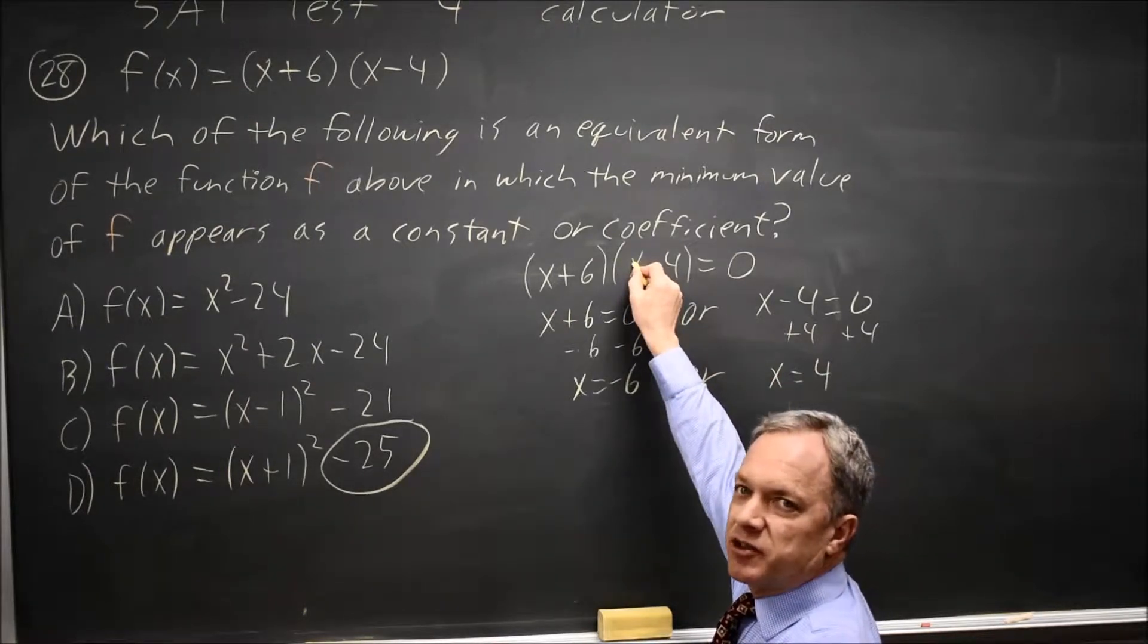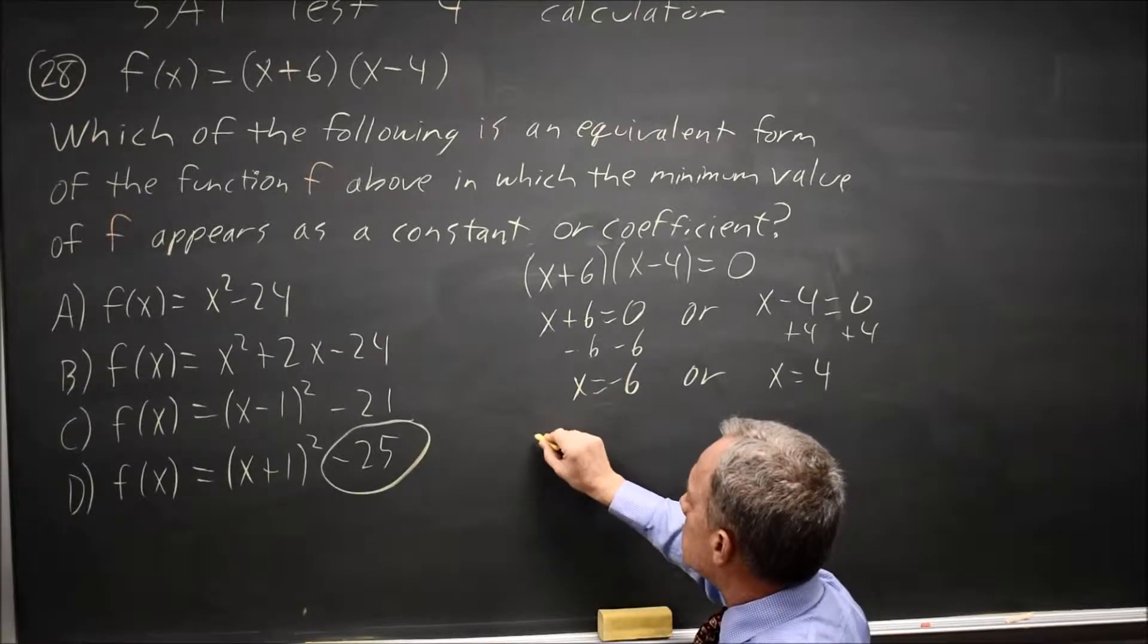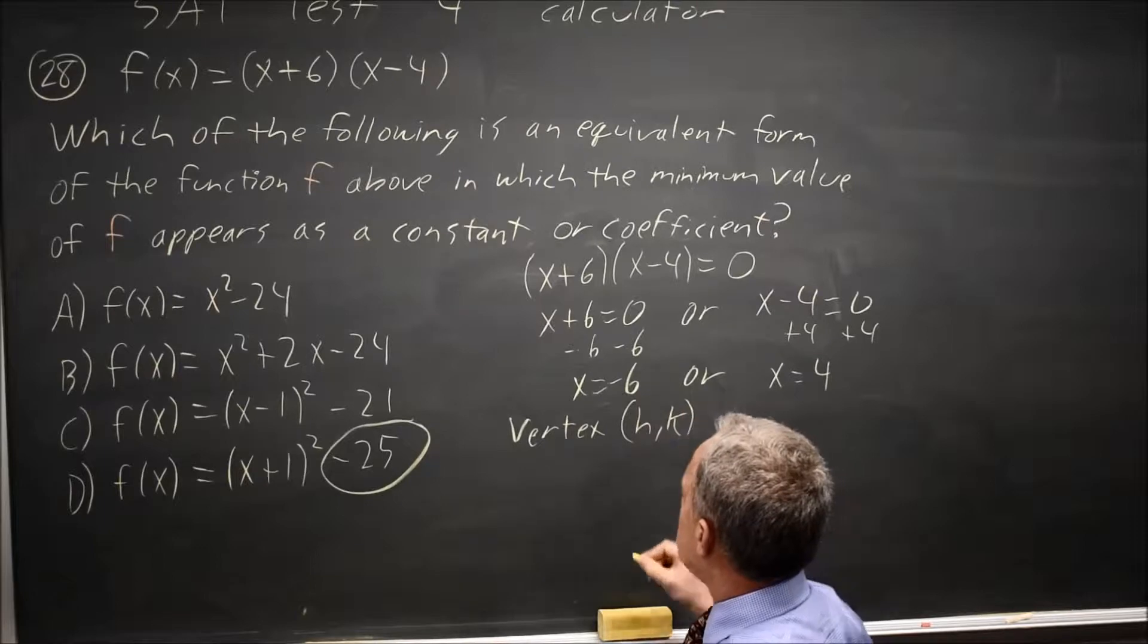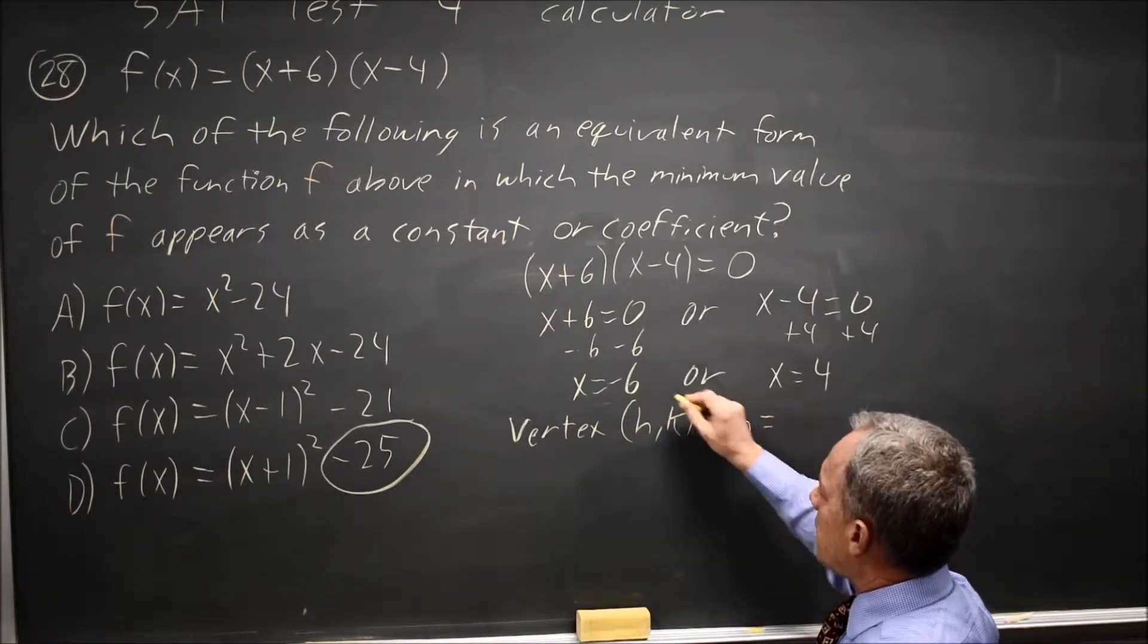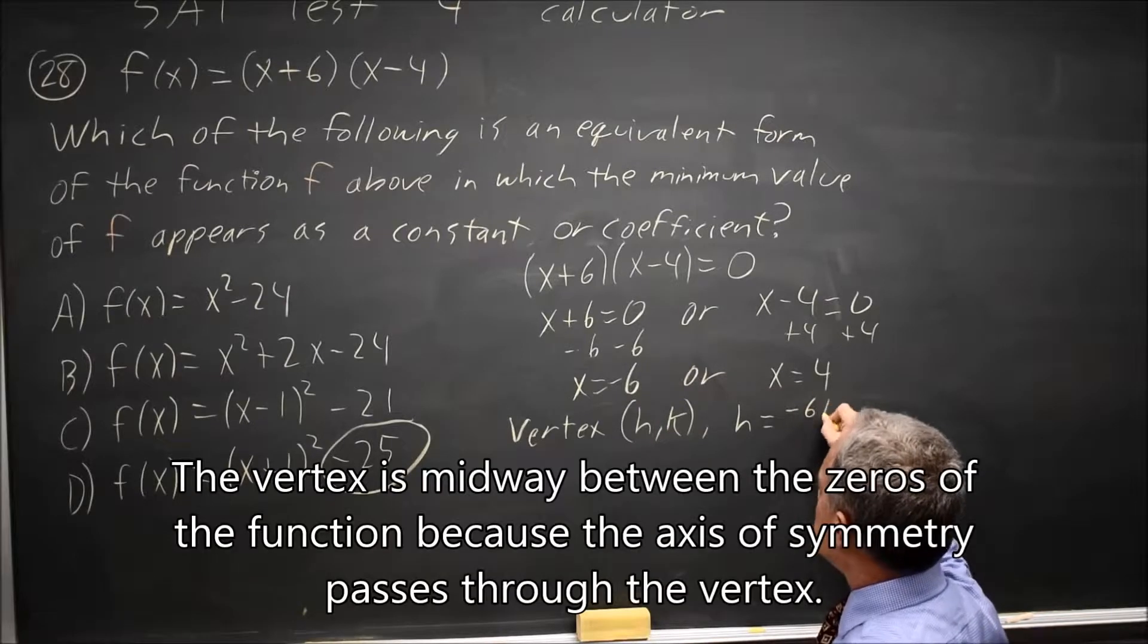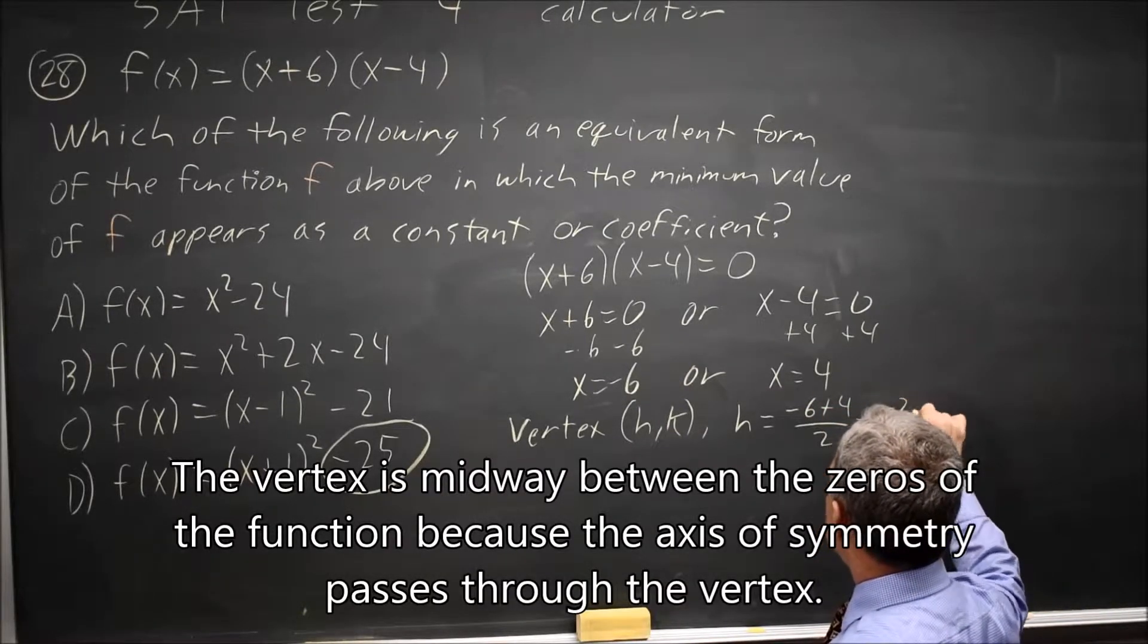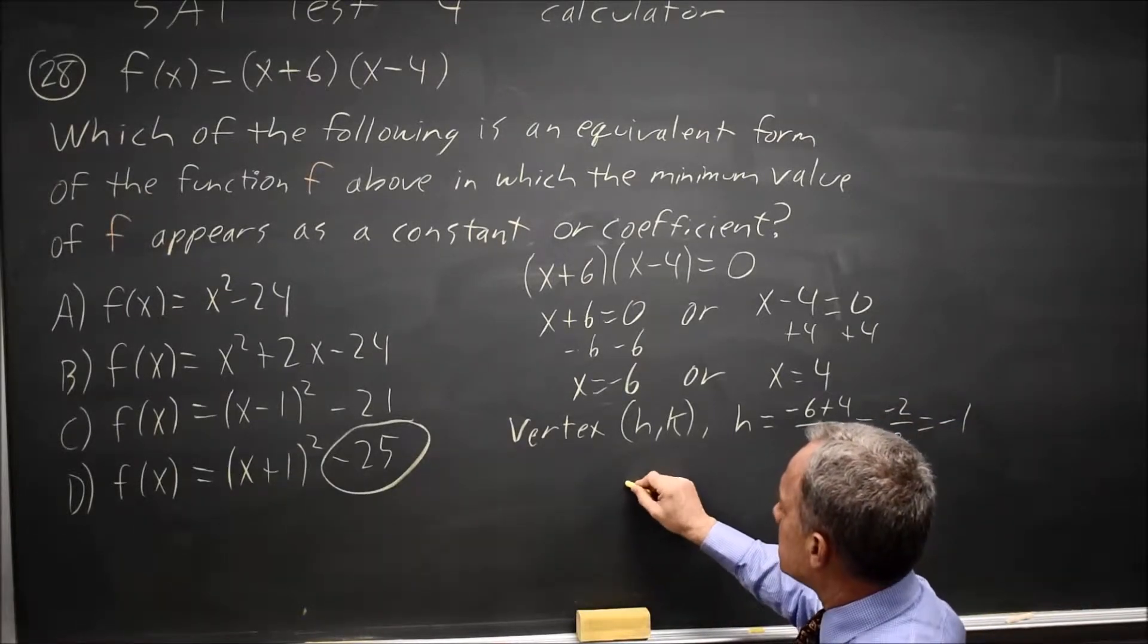They're the values of X when the function is equal to 0. So for the vertex, H K, the standard letters for the vertex, H equals the average of the two zeros, negative 6 plus 4 over 2, which is negative 2 over 2 equals negative 1. So the vertex is negative 1.